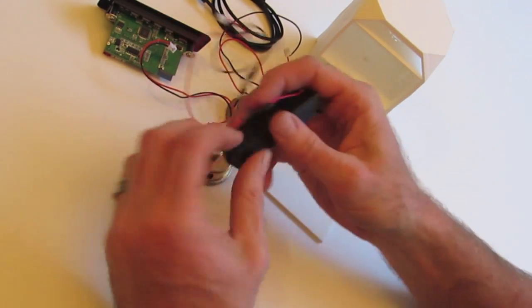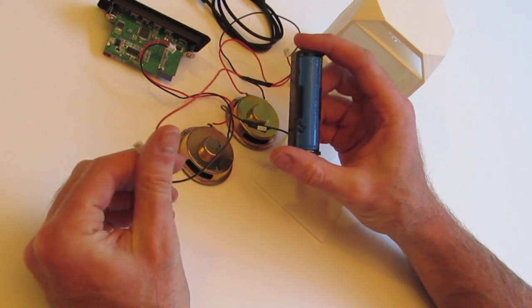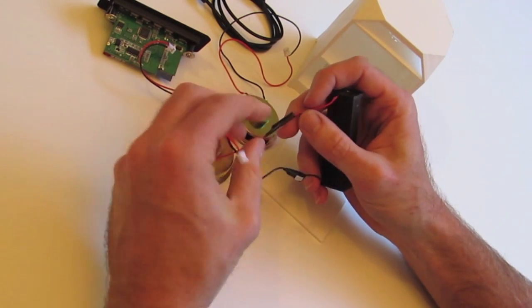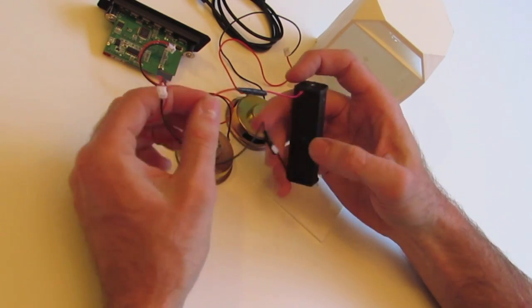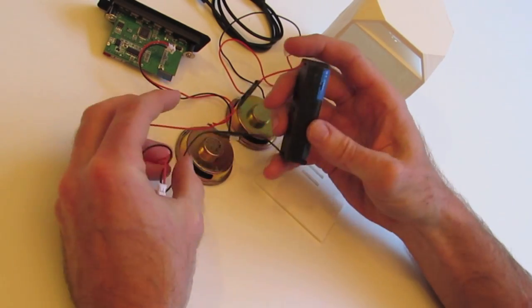So two speakers, and then lastly we've got our battery, and our battery holder. It's a lithium iron 18650 battery. Once again, just take your little cable, and join them to the corresponding positive and negative on the battery holder.